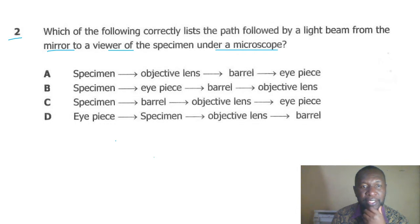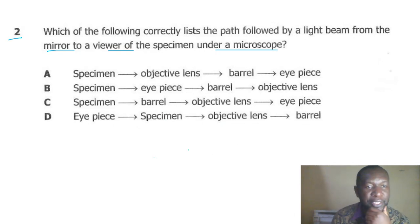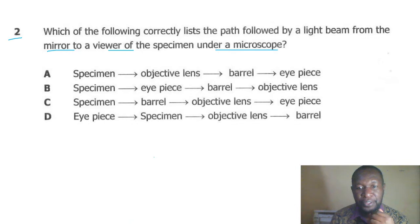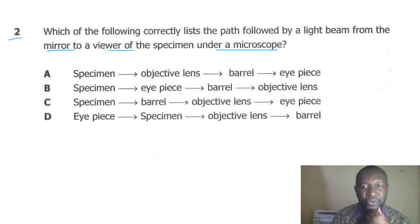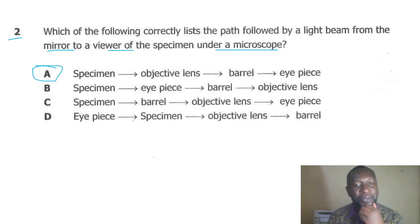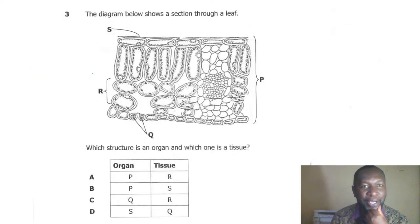For the microscope question: how is light going to move? Is it A — specimen to objective lens to barrel to eyepiece; B — specimen, eyepiece, barrel, objective lens; C — specimen, barrel, objective lens, eyepiece; or D — eyepiece, specimen, objective lens, barrel? The correct answer is A: specimen → objective lens → barrel → eyepiece. That is how light moves. Well done!